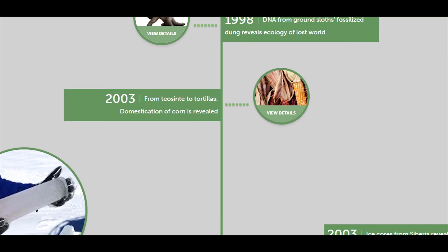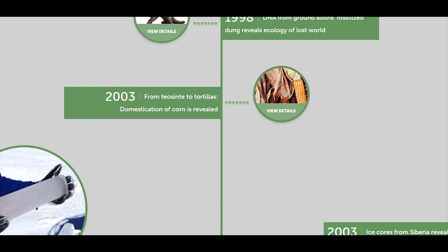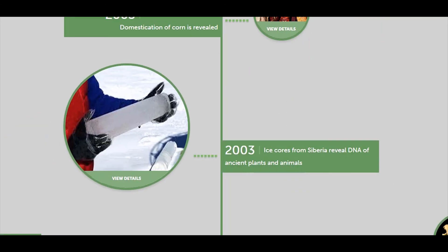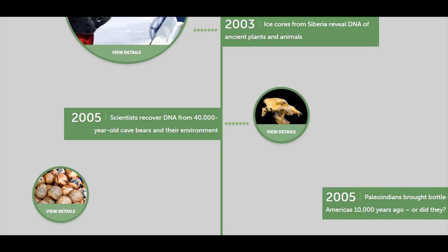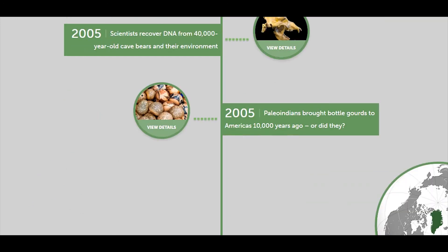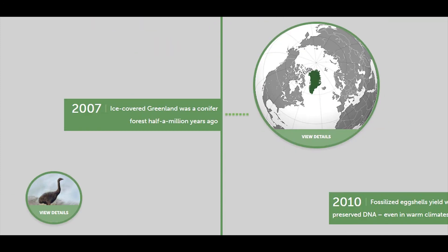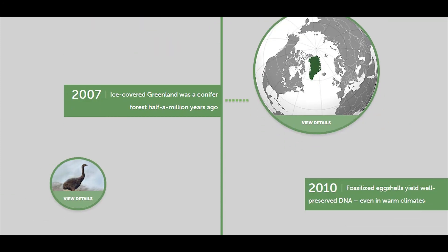In 2003, the origin of the domestication of corn was revealed. Also in 2003, ice cores from Siberia revealed DNA of ancient plants and animals. In 2005, researchers recovered DNA from 4,000-year-old cave bears and their environment. Also in 2005, a study examined whether Paleo-Indians brought bottle gourds to the Americas 10,000 years ago.